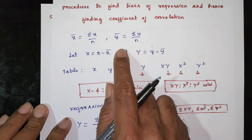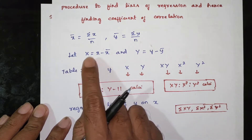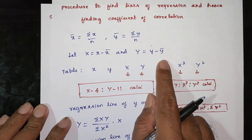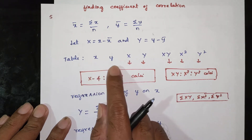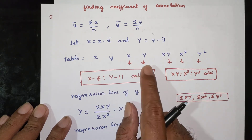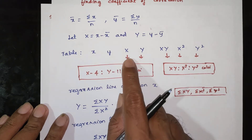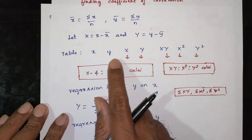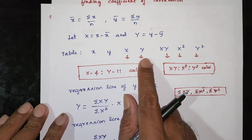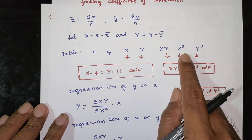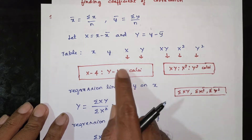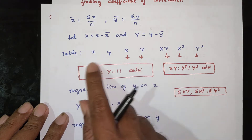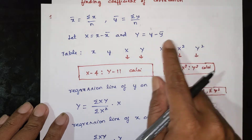First, find x̄ and ȳ. Let capital X = x minus x̄, and capital Y = y minus ȳ. Then make the table with columns x, y, capital X, capital Y. First make the xy table, then add columns for capital X, capital Y, capital X², and capital Y².